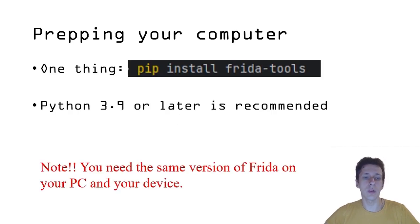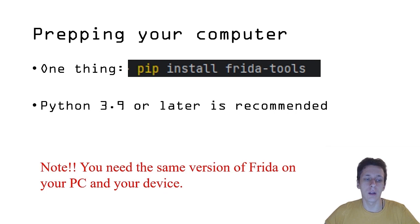To prepare your computer, you need to install Python 3.9 or later, and run the one command: pip install frida-tools. Note that you'll need the same version of Frida on your PC and on your device where you will be instrumenting your application.